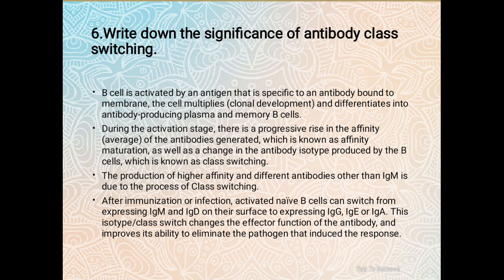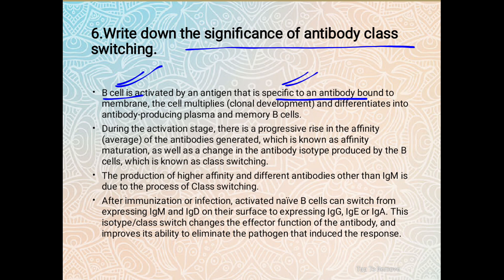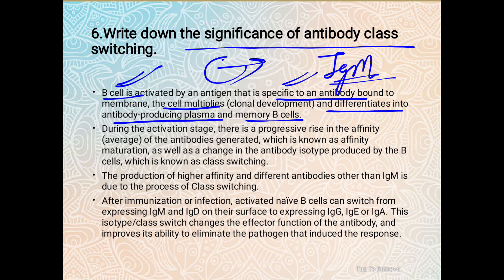The next question is the significance of antibody class switching. B cells are activated by an antigen that is specific to an antibody bound to their membrane. When an antigen enters our body, B cells produce a specific antibody through clonal selection and clonal proliferation. A specific B cell activated against a specific antigen becomes multiple copies, producing many antibody-secreting plasma cells and memory cells. Initially, the primary antibody produced is IgM.